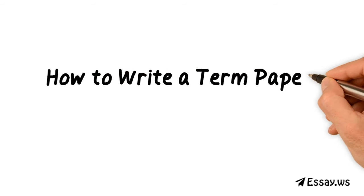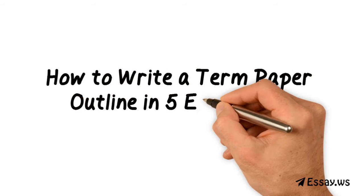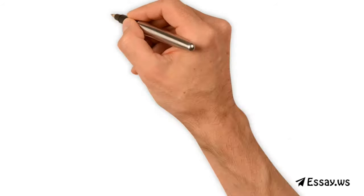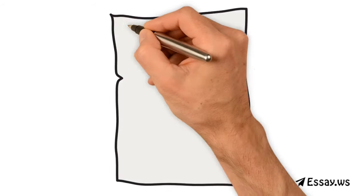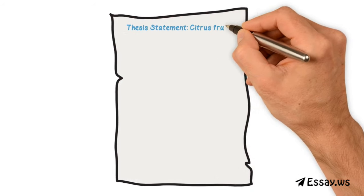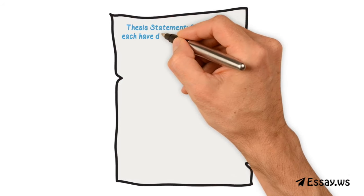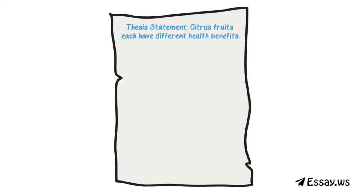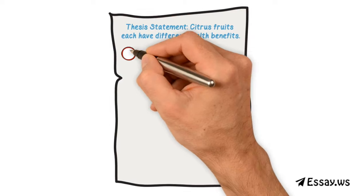How to write a term paper outline in 5 easy steps. Step 1: Identify your main idea. This is all you need for the introduction portion of your paper outline. Label your introduction.